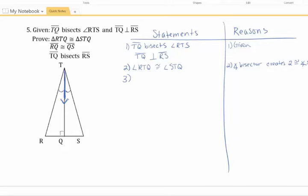All right, so those are now equal. Let's see, what else do I have here? TQ is in the middle here, and that's got to be a reflexive property. So TQ is congruent to itself by the reflexive property.